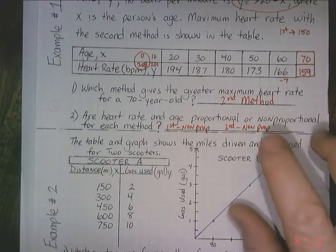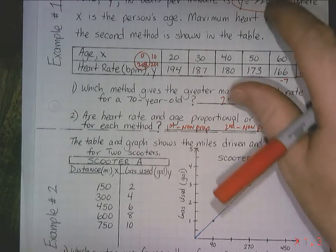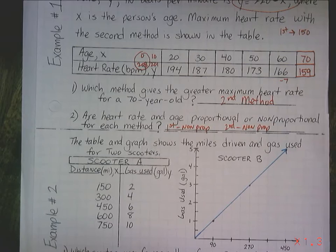Remember, to be proportional, you have to go through 0. You have to either originate at 0 or go through 0 to be proportional. So those methods here, both of them, are non-proportional. Moving on.